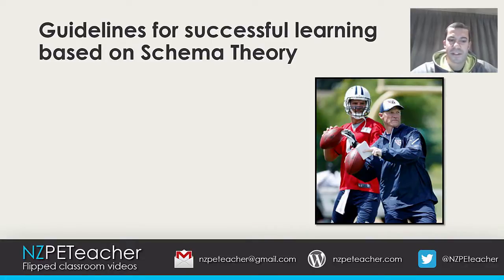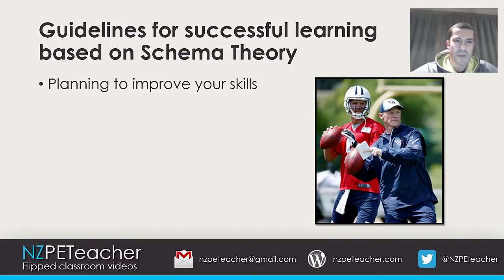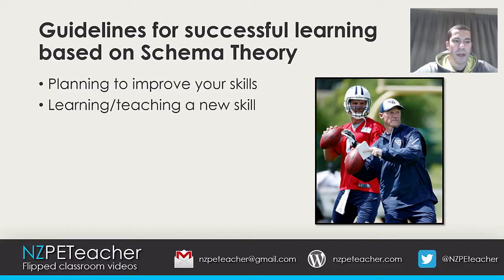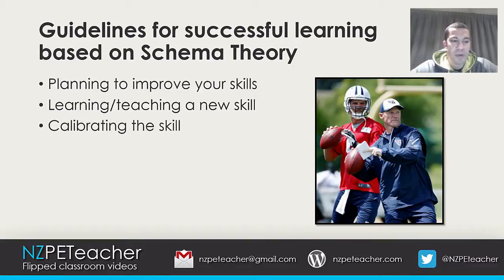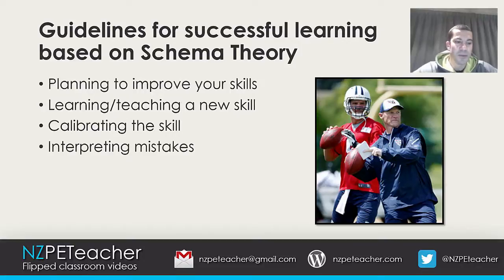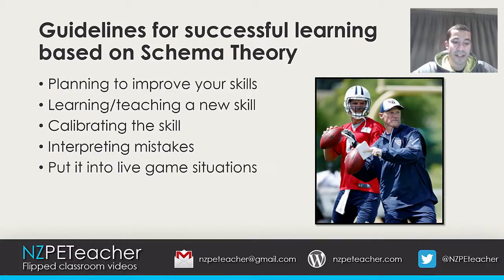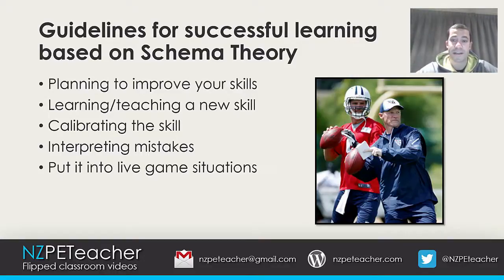There are a few guidelines to follow for successful learning based on the schema theory. First, create a plan: understand the skill, sport, and everything about it — what are the key movement patterns, do you have the correct equipment, are there any key cues, is there any expert footage? Second, implement a learning program based on the information sourced in your plan. Third, calibrate your skill so you can perform it through a wide variety of conditions, not just in a closed environment during a training session. Fourth, interpret your mistakes — why did that happen, what did you do wrong, how can you do it differently next time? Fifth, test your skill development in an open environment such as a live game situation. If you can do those five things, you will have success using this theory of learning in physical education or your performance improvement program.